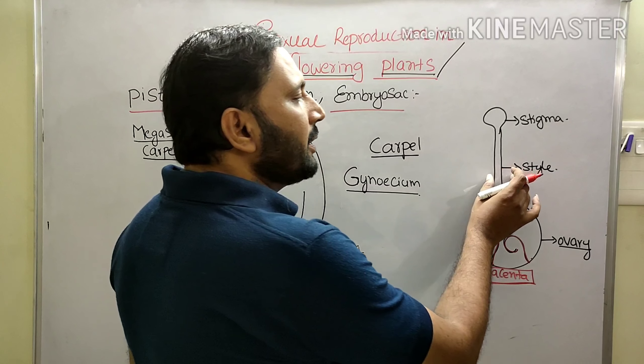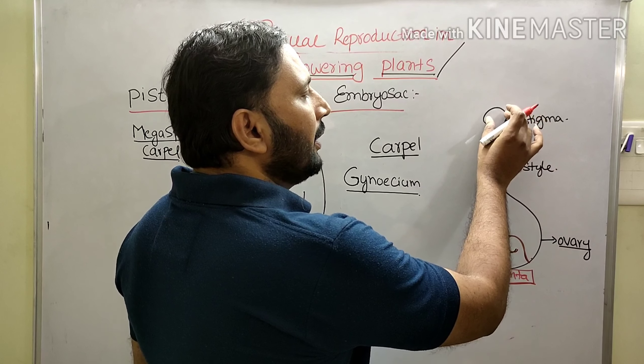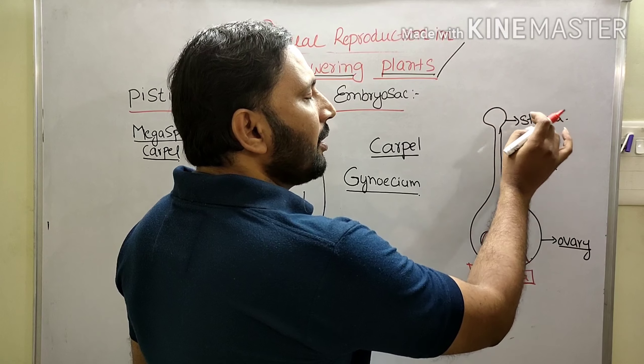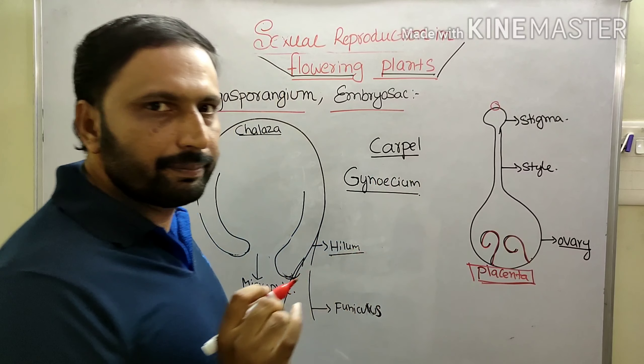The middle elongated part is called Style. The tip part is called Stigma. Pollen grains fall on the Stigma.